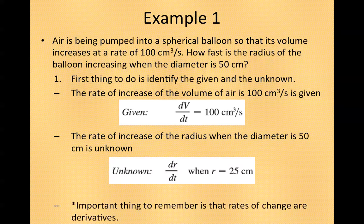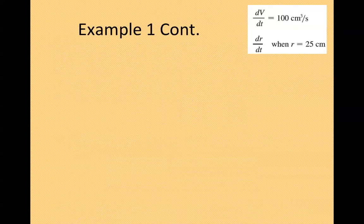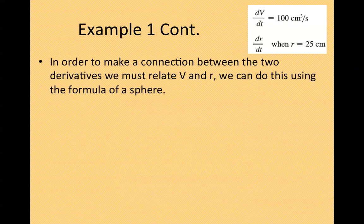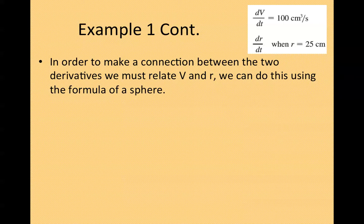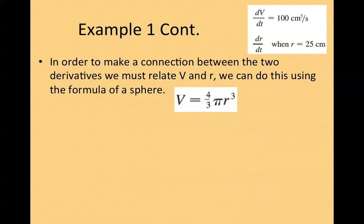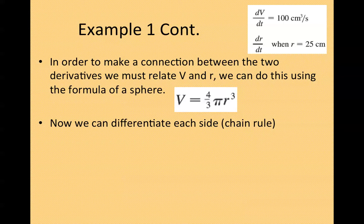The important thing to remember is that rates of change are derivatives. So, in order to make a connection between the two derivatives, we must relate V and R. We can do this by using the formula of a sphere. Volume of a sphere equals 4/3 π R³.